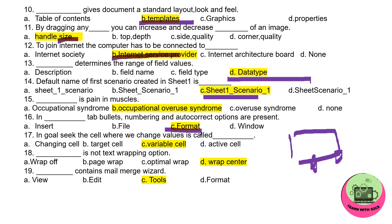One more thing: the style-related option also you can find in Format menu. So whenever you do MCQs, try to make out questions out of the options. That will help in your exams. In 17th one: in Goal Seek, the cell where we change values is called variable cell. Variable means changing itself, so from that also you can guess the answer.